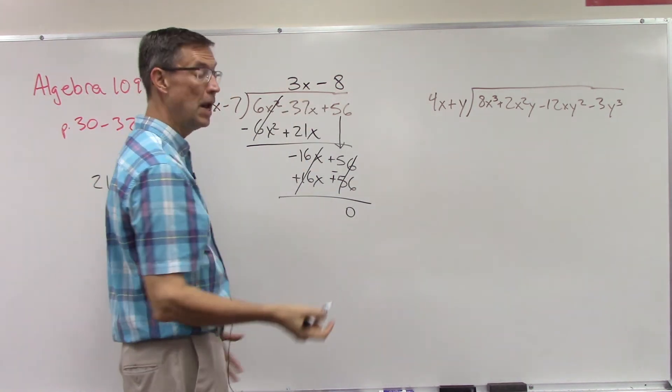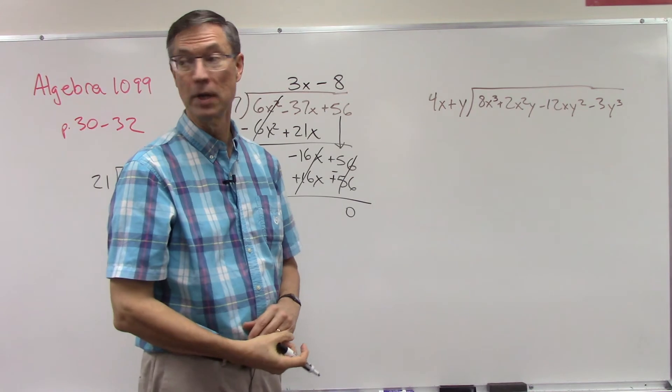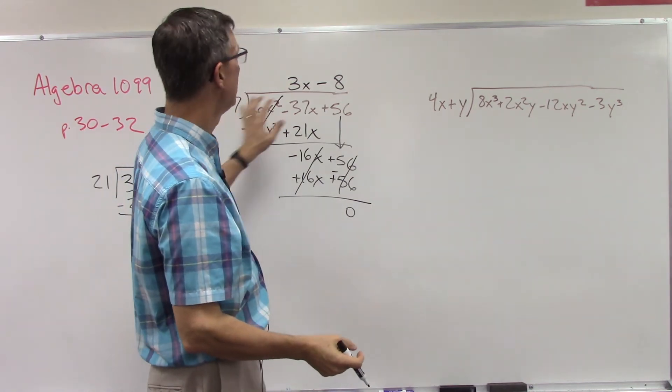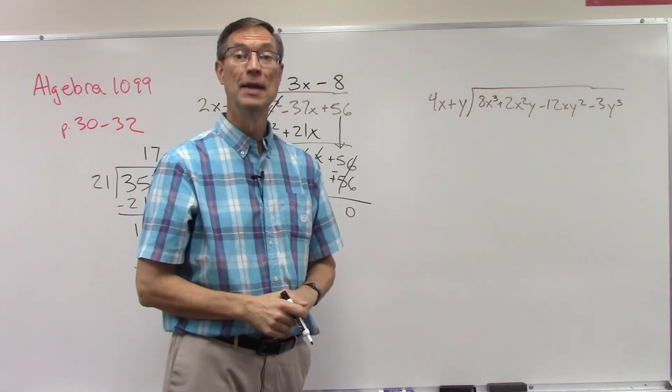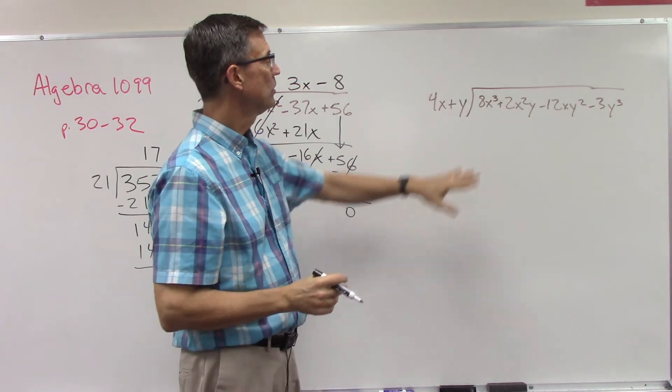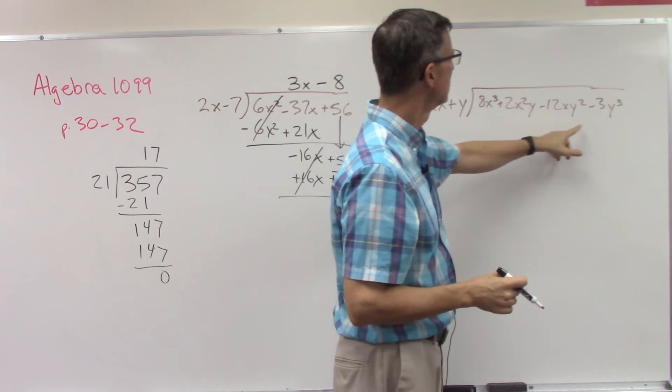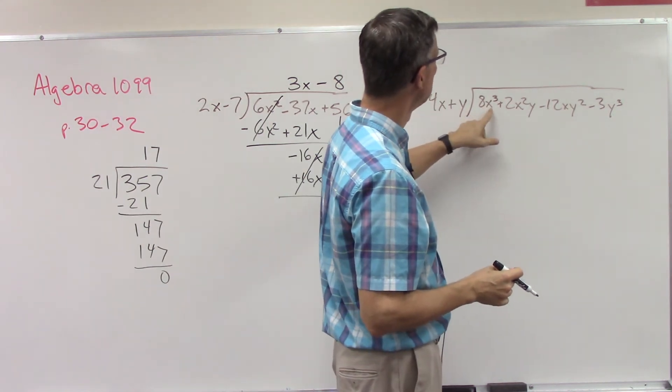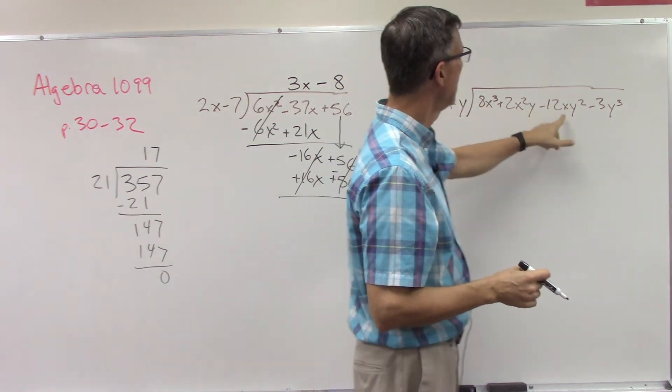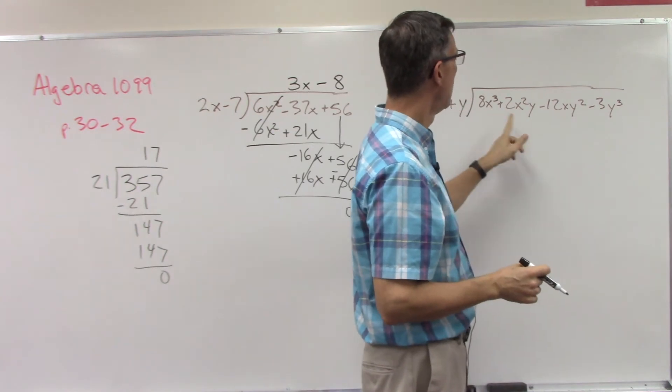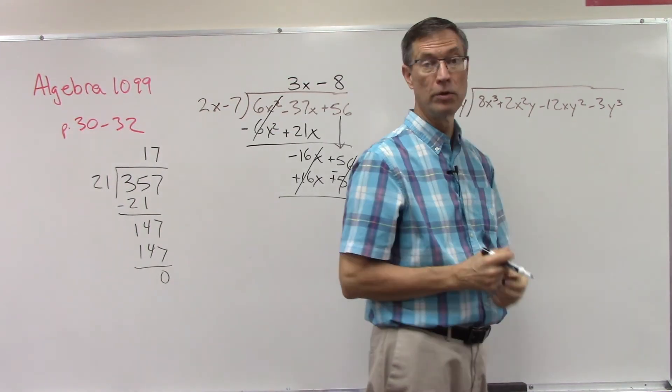So we now have the answer. You can go back and check your work by multiplying this binomial times that binomial and get your answer. Let's look over here at this one. This one looks a little more complicated - we have x terms, we have some y terms. Notice the x is going down x to the third, x squared, x, no x. Then y to the one, y squared, y to the third. That's often the pattern we need to see when we have multiple variables.